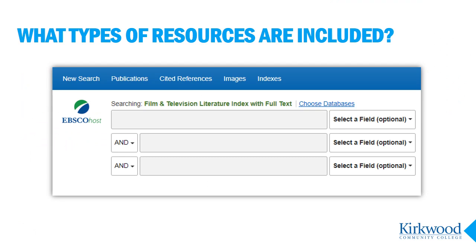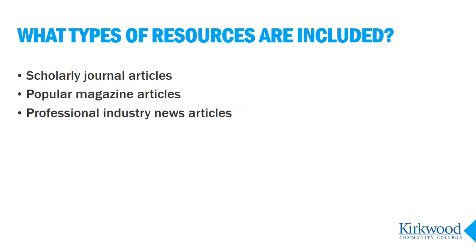This video will share some basic information about Film and Television Literature Index and how as student researchers you can make the best use of it in your schoolwork. Film and Television Literature Index is a subscription database that provides thousands of articles on Film and Television Studies. Their main purpose is to provide articles useful for students studying in these disciplines, covering a wide range of topics related to Film and Television Studies.